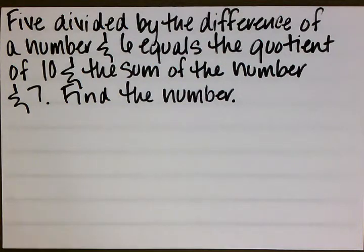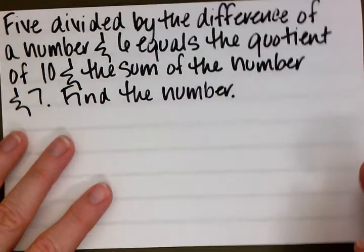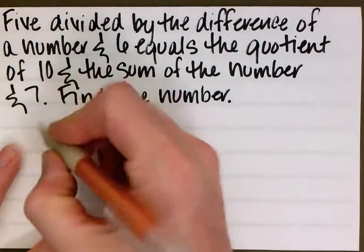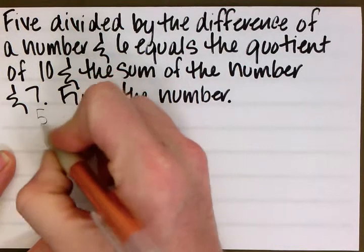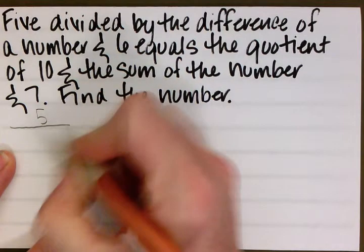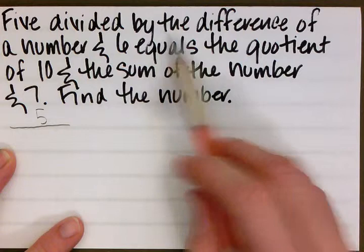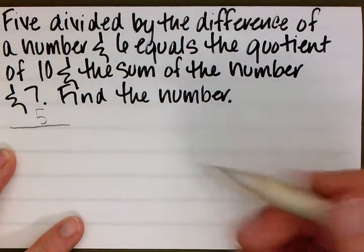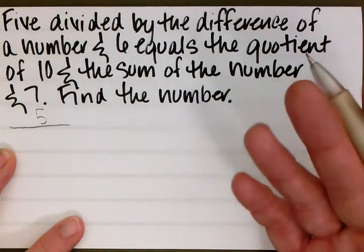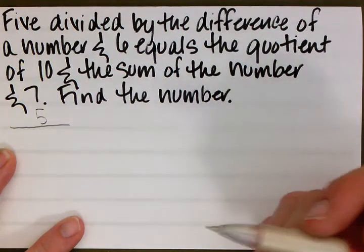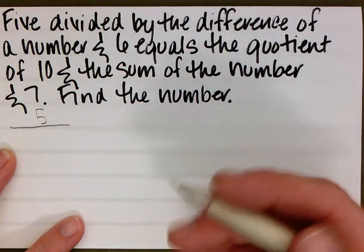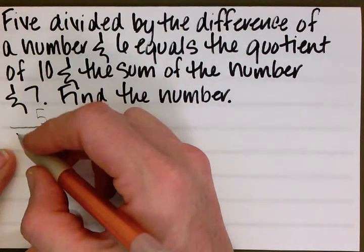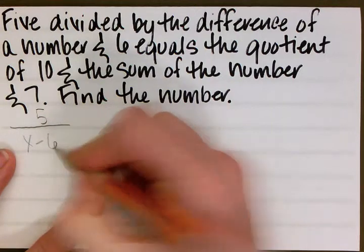Let's start. We have 5 divided by the difference of a number and 6. Let's use x as our variable for the unknown number. The difference of the number and 6 is x minus 6.